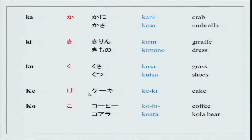Kohi — with a long sound ko and hii — means coffee, and koara means koala. You will notice that we do not have 'l' in Japanese — all l's are supposed to be pronounced as 'ra' sounds.